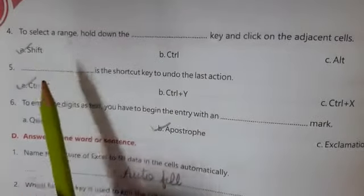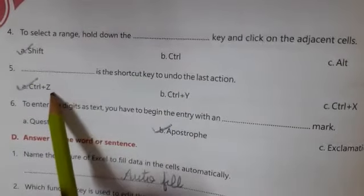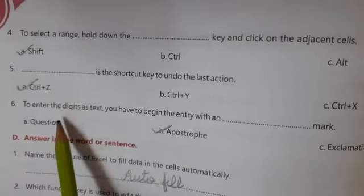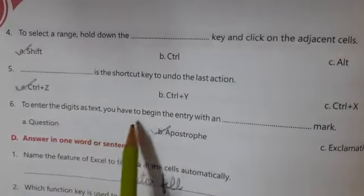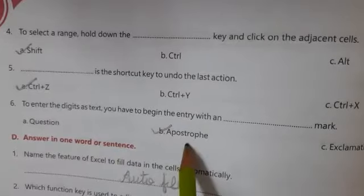Number five: The shortcut key to undo the last action is Ctrl plus Z. Number six: To enter the digits as text, you have to begin the entry with an apostrophe mark.